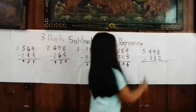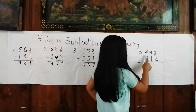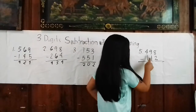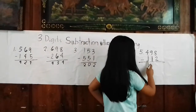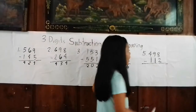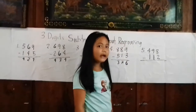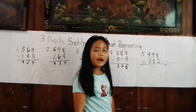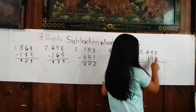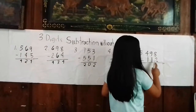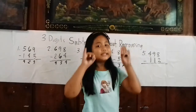Number 5: 498 minus 112. First, we will subtract the ones place. 8 minus 2 equals 6.